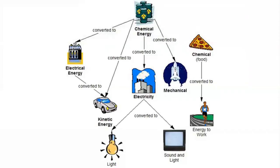Energy can be converted from one form to another. For example, the food a person eats contains chemical energy, and a person's body stores this energy until he or she uses it as kinetic energy during work or play. Chemical energy stored in coal or natural gas, and the kinetic energy of water flowing in rivers, can be converted to electrical energy, which in turn can be converted to light and heat.